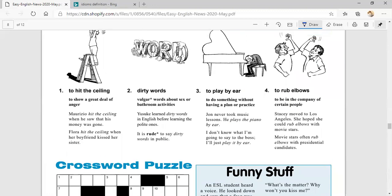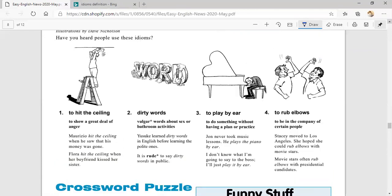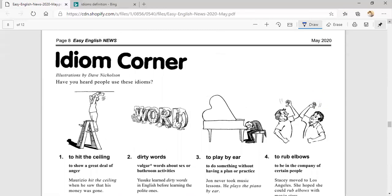We have the crossword puzzle and all the different articles written by students, English students. But this is probably my favorite part of the paper. This part is called idiom corner, idiom corner, not to be confused with the word idiot that ends with a T.